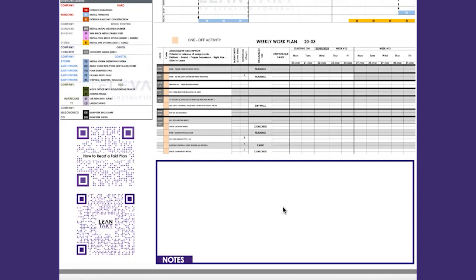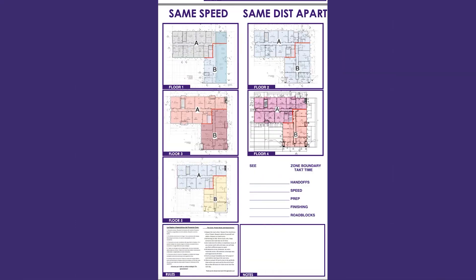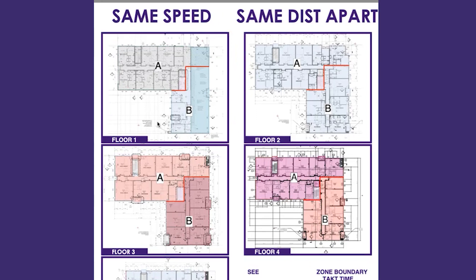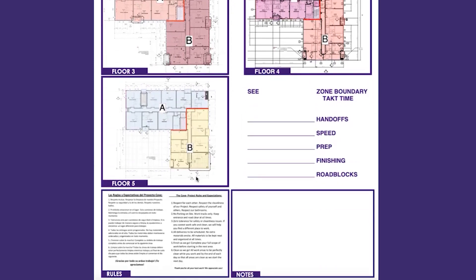There's also a second page. We're always worried about the visualization of time and space. On the front side, you have the schedule and the look-ahead to take into the field and walk the project. On the back side, you have the zones — floor one all the way to floor five — so you can visually see the locations. There are also rules to the TACT system, a place for notes, and a spot to watch for handoffs, the speed of the trades, preparation of future areas, how well they're finishing, and any roadblocks they might find.